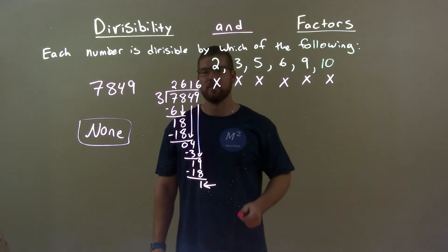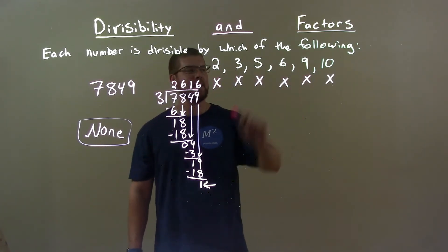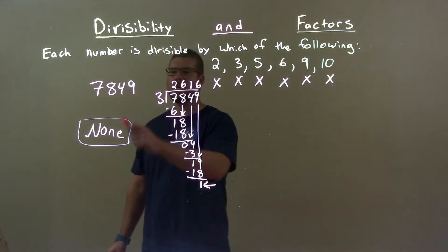9 doesn't work because 3 didn't work. If 3 works, 9 has to work. Since 3 doesn't work, 9 can't work. 10 we already knew didn't work because this is an odd number.